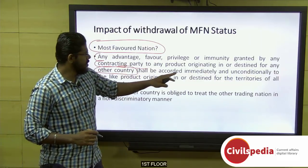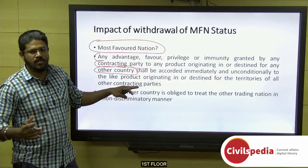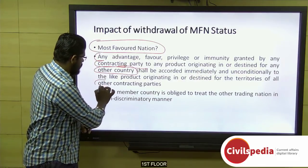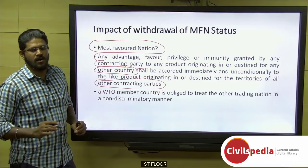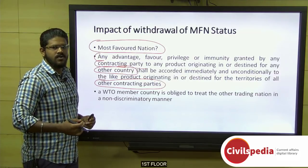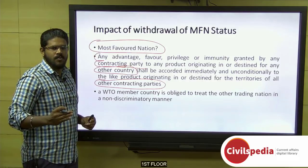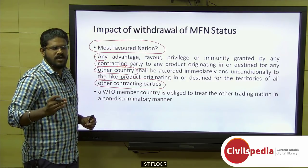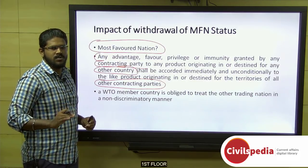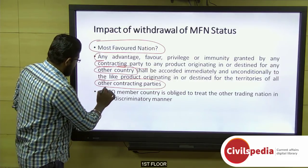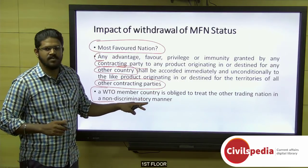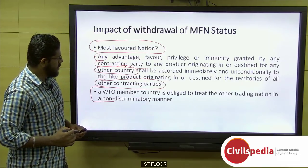...shall be accorded immediately and unconditionally to any similar product originating in or destined from the territories of all other contracting parties — that is, all other WTO members. This means if a country extends a trade favor bilaterally to another country, it must extend similar privilege and favor to all WTO member countries. In short, a WTO member is obliged to treat other trading nations in a non-discriminatory manner.